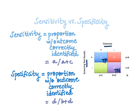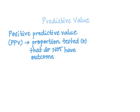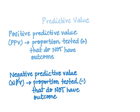From here we can calculate our predictive values. We have two to define. Number one is our positive predictive value (PPV), which is the proportion of people who tested positive that do have the outcome. This is as opposed to our negative predictive value (NPV), which is defined as the proportion of people who tested negative that do not have the outcome.